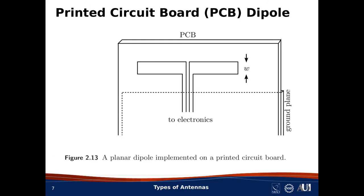Dipole antennas show up in many places. For example, it's not unusual to see a dipole on a printed circuit board. In this case, the radius a becomes a width W, but that doesn't change much. What might differ is that efficiency is probably reduced, since the printed circuit board material will have some loss, and above a few hundred megahertz that loss can become quite significant.